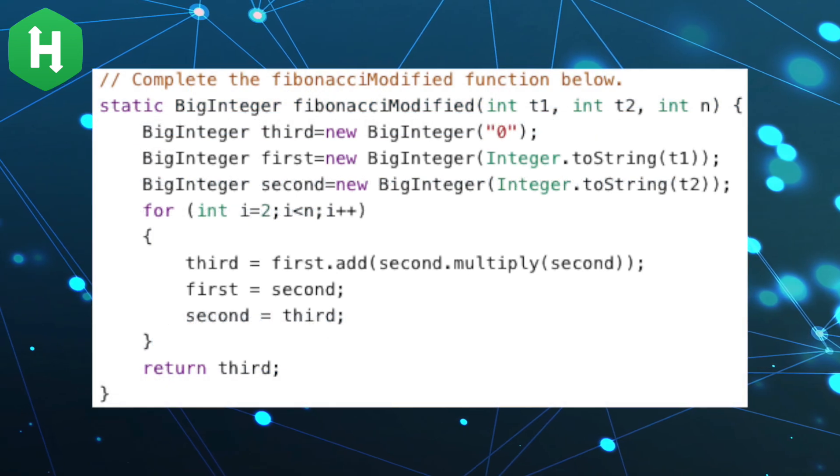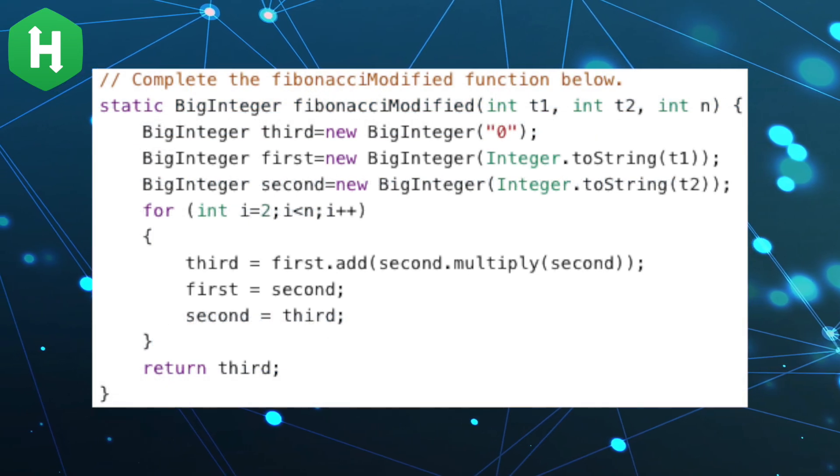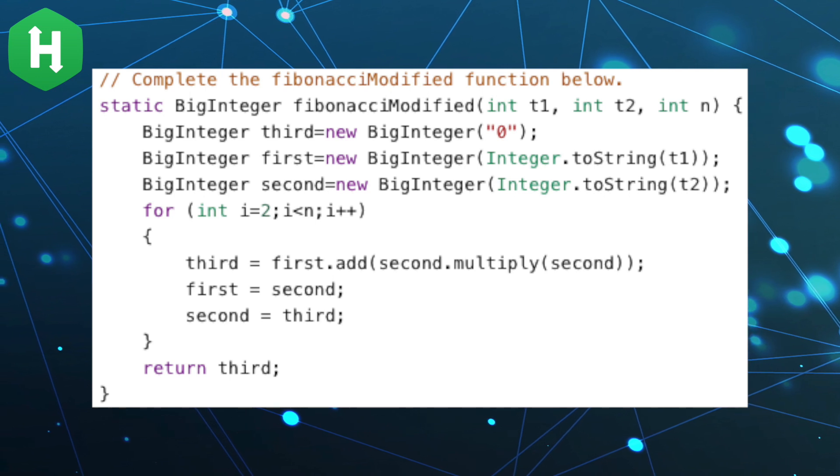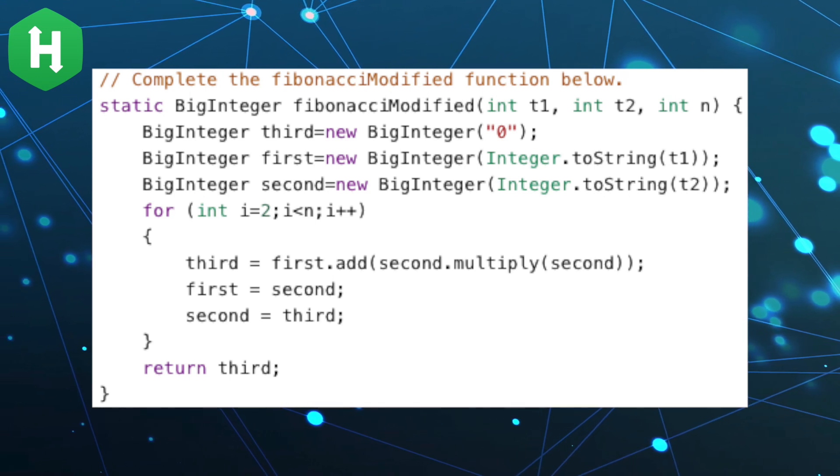The solution to this problem is simple and requires the use of the BigInteger class to account for numbers that exceed the range of a 64-bit integer.